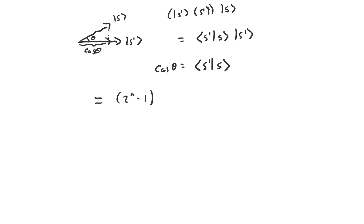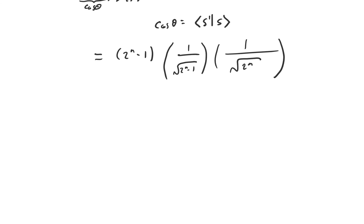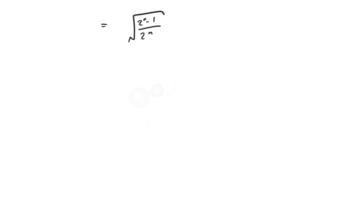s-prime and s have 2^(n−1) components in common when we write them as a linear combination of the computational basis states. s has all of them and s-prime is missing the x-star component. For s-prime, all these basis states have coefficient 1/√(2^(n−1)), and for s, all these components have coefficient 1/√(2^n). So the inner product of s-prime and s is √(2^(n−1)) / 2^n. Sine(θ) turns out to be prettier: sine(θ) is just √(1/2^n).